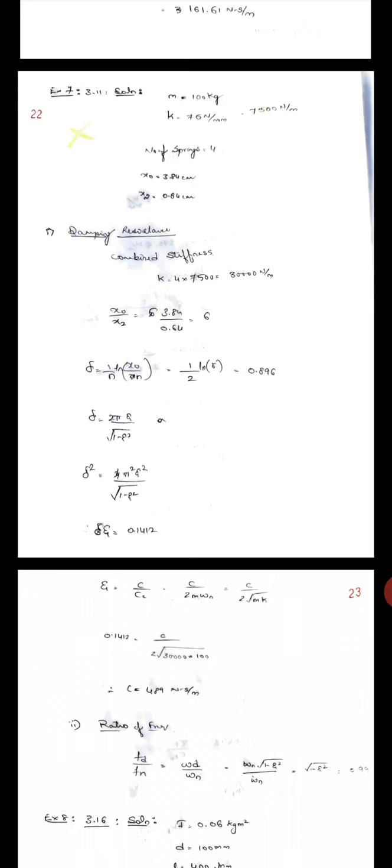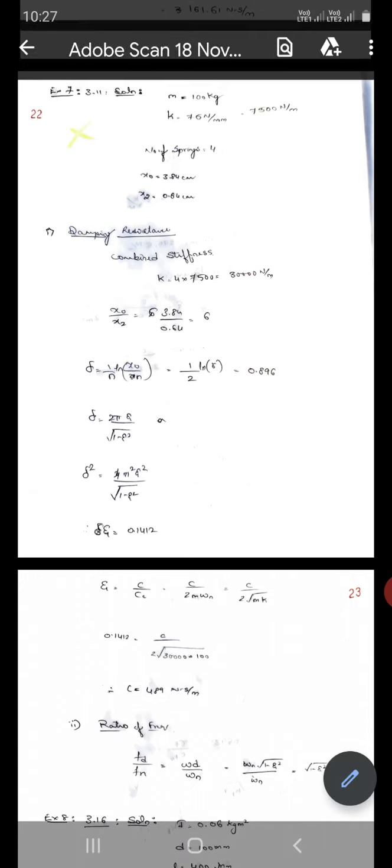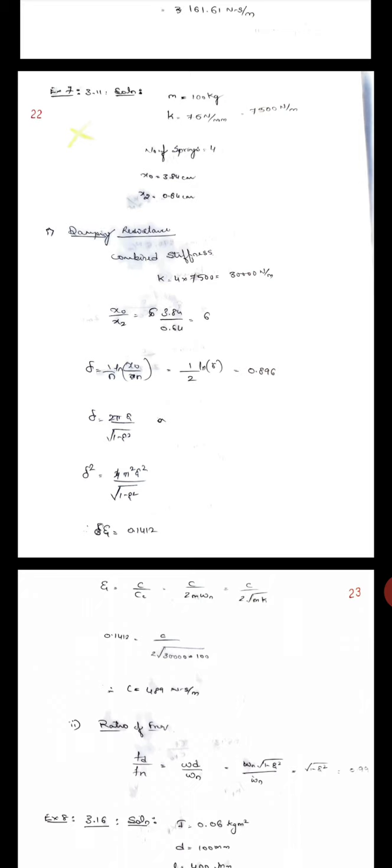Type 1 logarithmic decrement problem, example 7. Problem 3.11: A system containing mass of 100 kg rested on 4 springs with stiffness 75 Nm per mm.